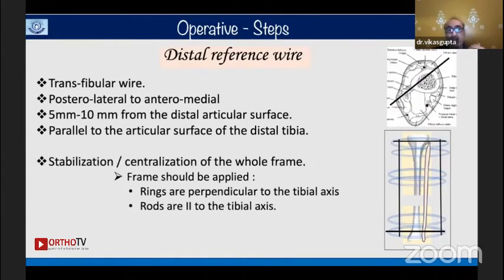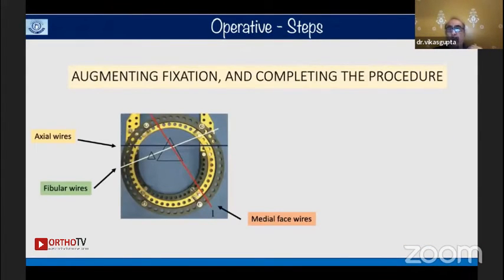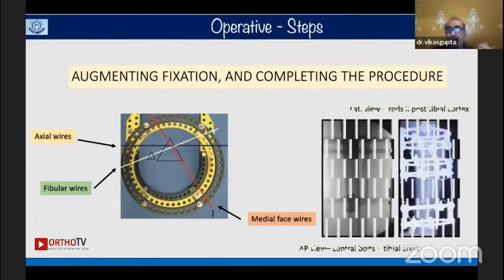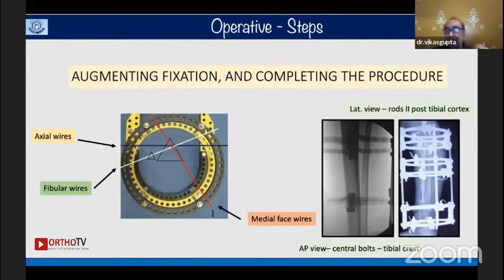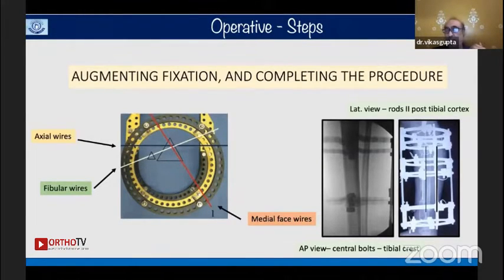Once done, the frame should be well stabilized and centralized. The rings should be perpendicular to the tibial axis and the threaded rods parallel to the tibial axis in the lateral view. Augment with fibular wires and medial face wires. In the AP view the central bone should lie over the tibial crest, and in the lateral view the rods should be parallel to the posterior tibial cortex.